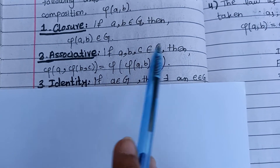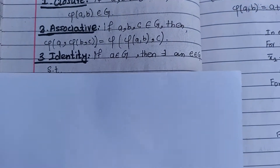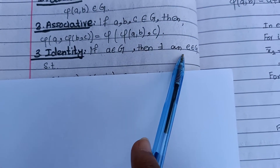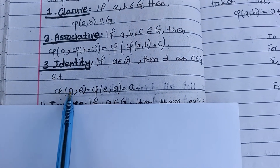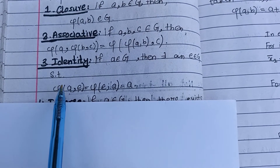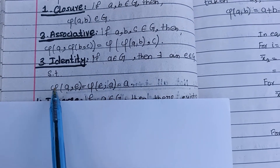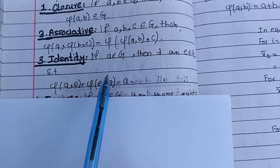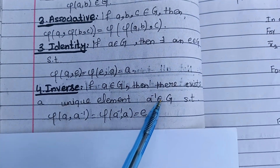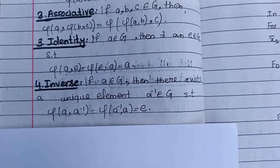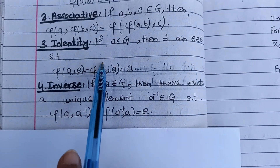The third condition is identity: if a belongs to G, then there exists an identity e in G such that φ(a, e) = φ(e, a) = a. In the law of composition we replace the second element with identity, and if it gives the same answer as the first term, we say identity exists. The fourth condition is inverse: if a belongs to G, then there exists a unique inverse such that φ(a, a⁻¹) gives us the identity found in the previous step.